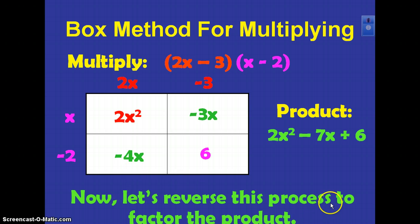How are we going to reverse this process to factor this product? Well, first of all, what do you notice about the product and where it all came from? Right, this first term here, your quadratic term, the 2x squared, came from that box right there. And your constant came from this box down here. So if we're going to reverse the order, that's where we're going to start.